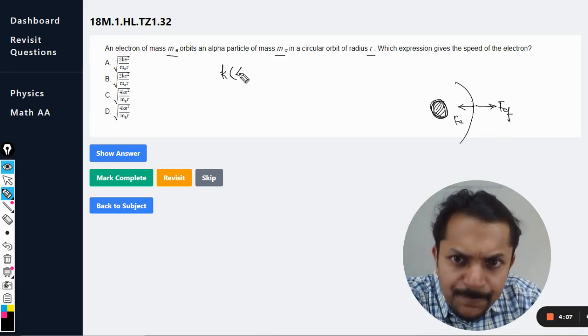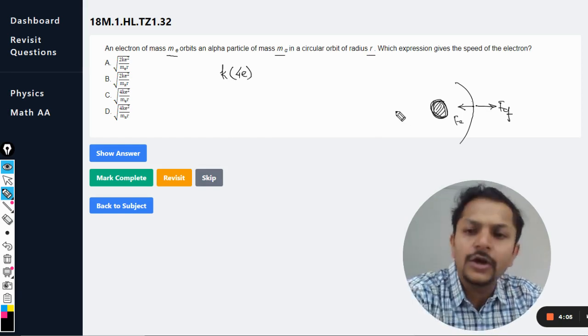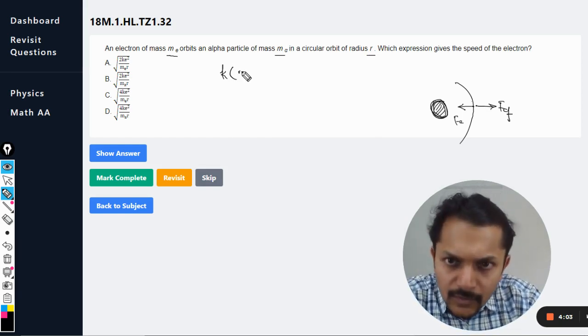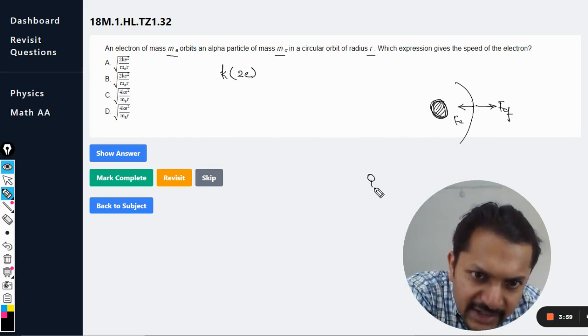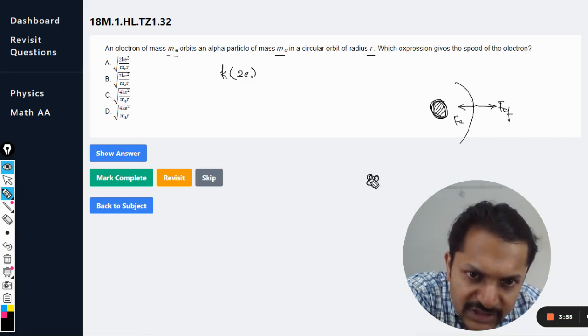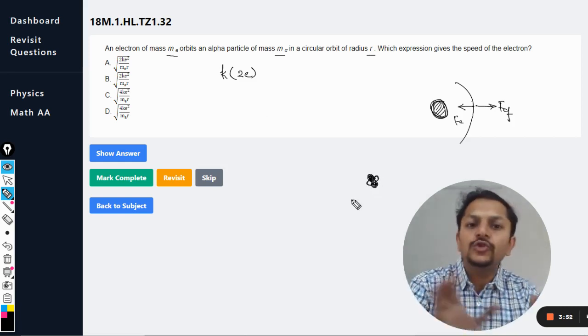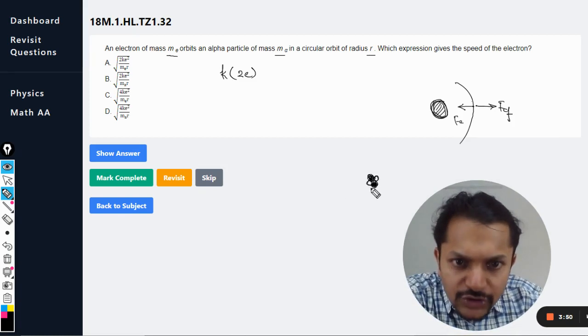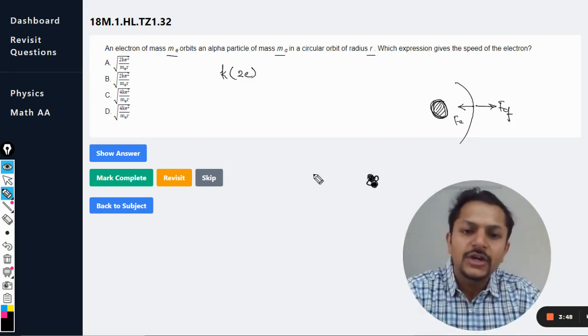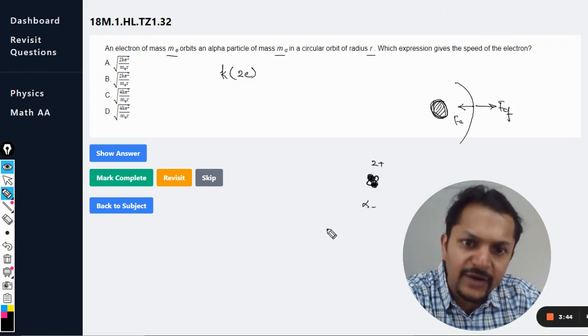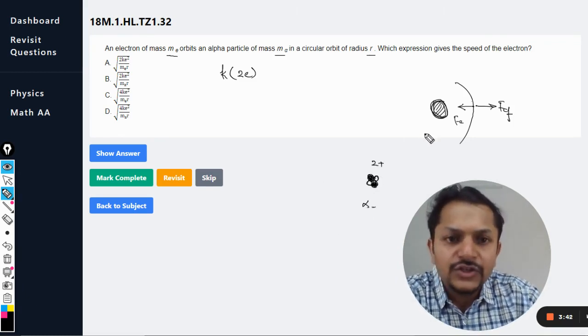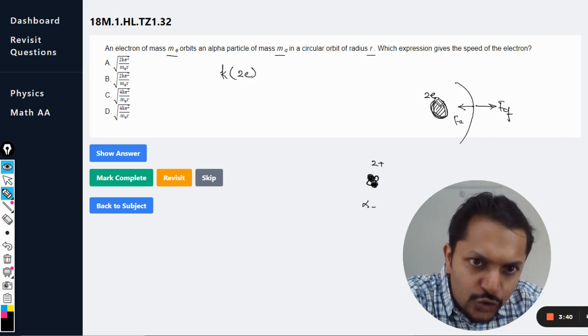The charge on alpha is 2e. What is alpha particle? Basically, alpha particle is the helium nucleus, and what is there in the helium nucleus? There are two protons and there are two neutrons, and the electrons of this helium atom have been removed. So obviously it is having two positive charge. So this is known as the alpha particle.